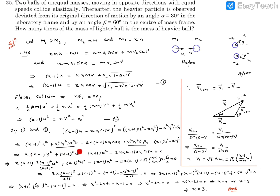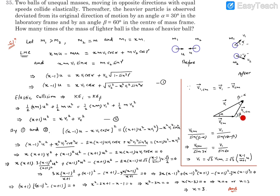Now we use the center of mass frame information. In the lab frame, the heavier particle deviates by alpha = 30°; in the center of mass frame, it deviates by beta = 60°. The velocity in the lab frame equals vcm plus the velocity relative to the center of mass. The center of mass moves horizontally. Drawing the velocity triangle: vcm is horizontal, the relative velocity makes angle beta = 60° with the original direction, and the resultant v1 makes angle alpha = 30°.